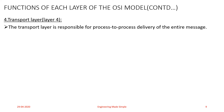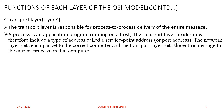The Transport layer is responsible for process-to-process delivery of the entire message. A process is an application program running on a host PC. The job of the Network layer is source-to-destination delivery of individual packets — it does not recognize any relationship between those packets and treats each data packet individually, whether or not each piece belongs to a separate message.